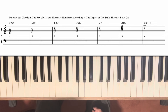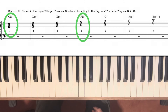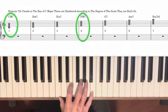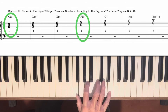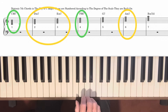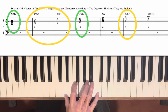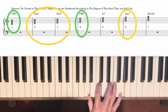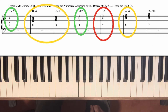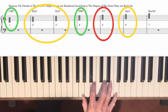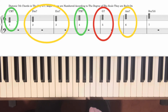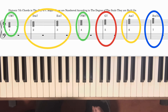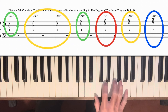In a major key there are four different types of diatonic seventh chords: major, minor, dominant, and minor seven flat five (also known as half diminished seventh chords). In the key of C major, on the first and fourth degrees you get major seventh chords — C major 7 and F major 7. On the second, third, and sixth degrees you get minor 7 chords: D minor 7, E minor 7, A minor 7. On the fifth degree only, you get a dominant seventh, and on the seventh degree only, you get a minor 7 flat 5 chord.